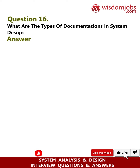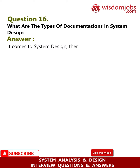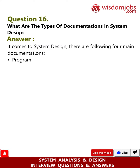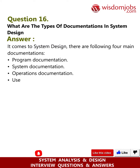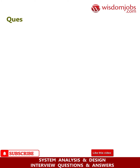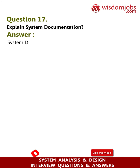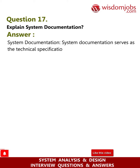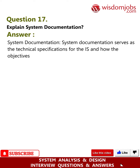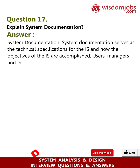Question 16: What are the types of documentation in system design? Answer: There are four main types of documentation in system design: program documentation, system documentation, operations documentation, and user documentation. Question 17: Explain system documentation. Answer: System documentation serves as the technical specifications for the information system (IS) and how the objectives of the IS are accomplished.